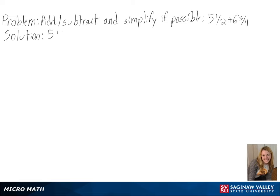Our problem is to add, subtract, and simplify if possible. The first part of our solution is to convert our mixed numbers into fractions so we can get a common denominator. Converting these, we get 11 over 2 plus 27 over 4.